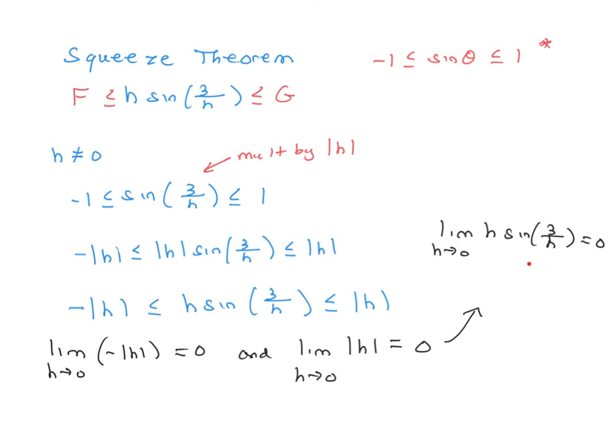This limit was equal to the limit on the previous page, which was f prime of 0. It exists because it is equal to 0, and we prove that by using the squeeze theorem.